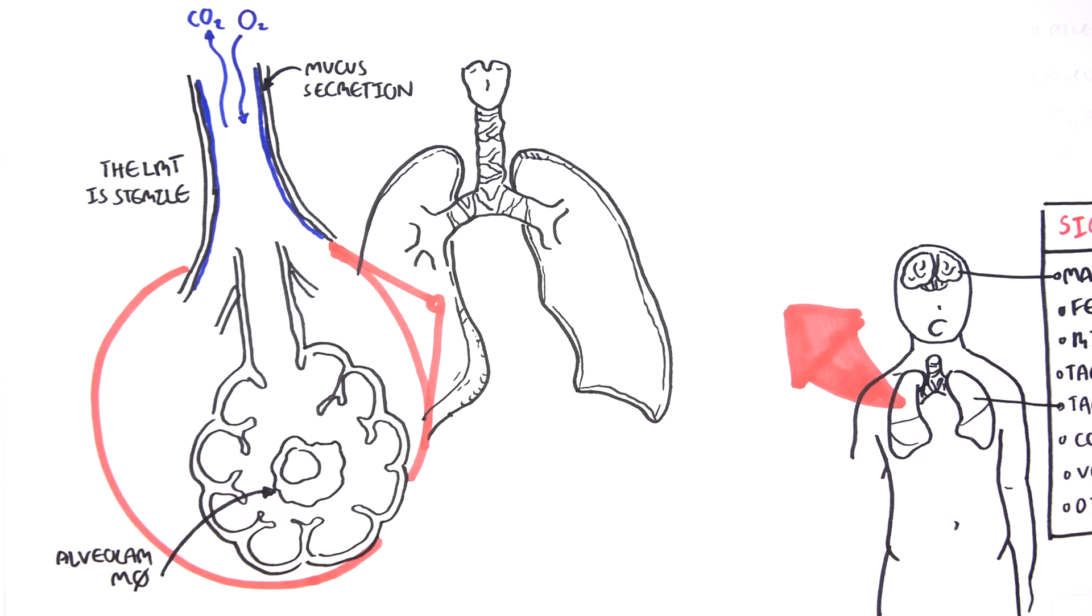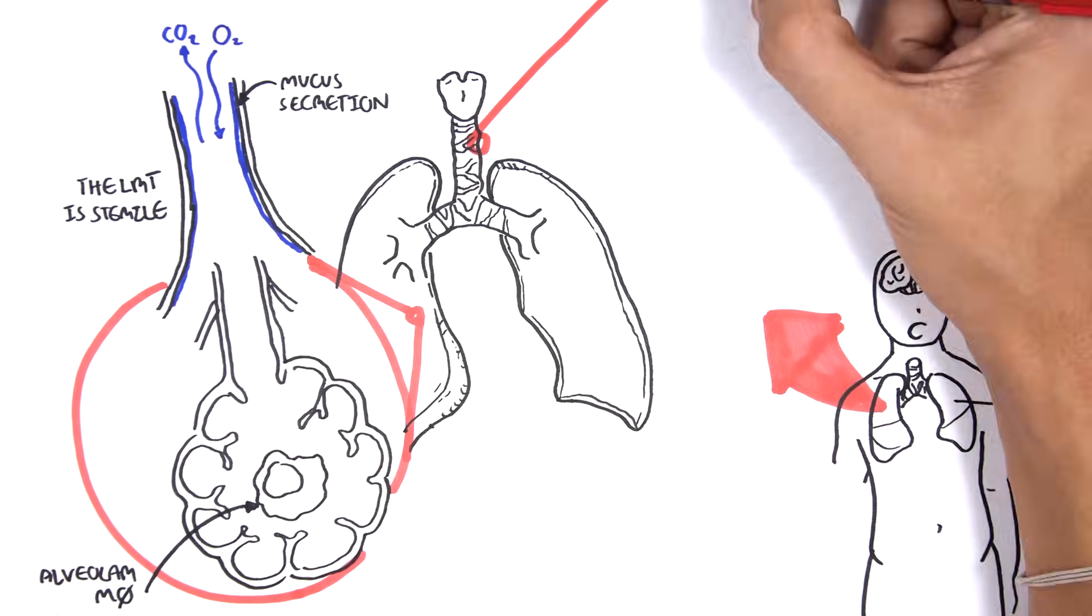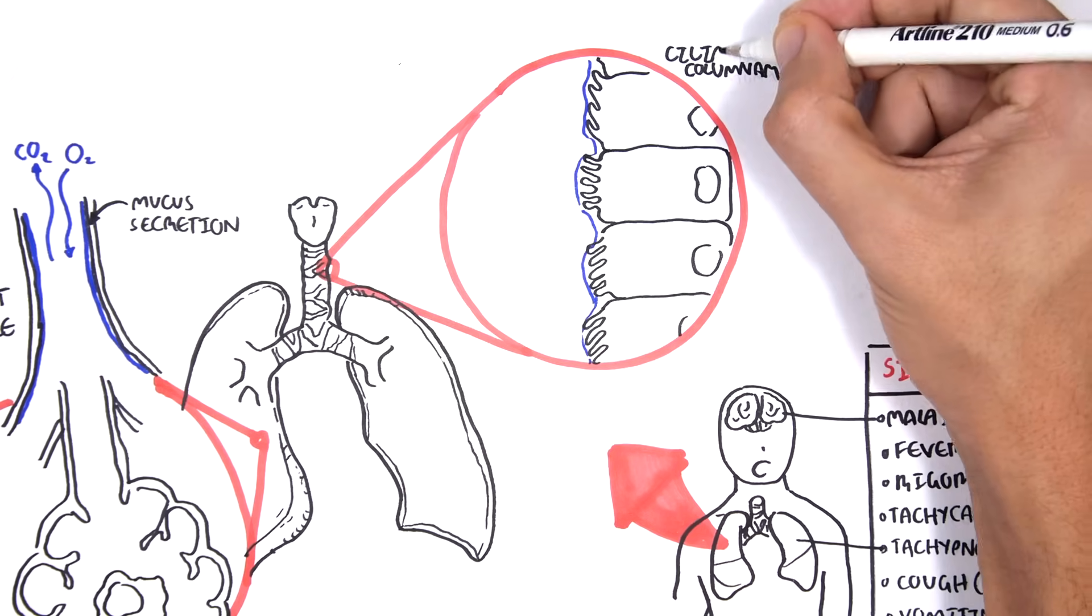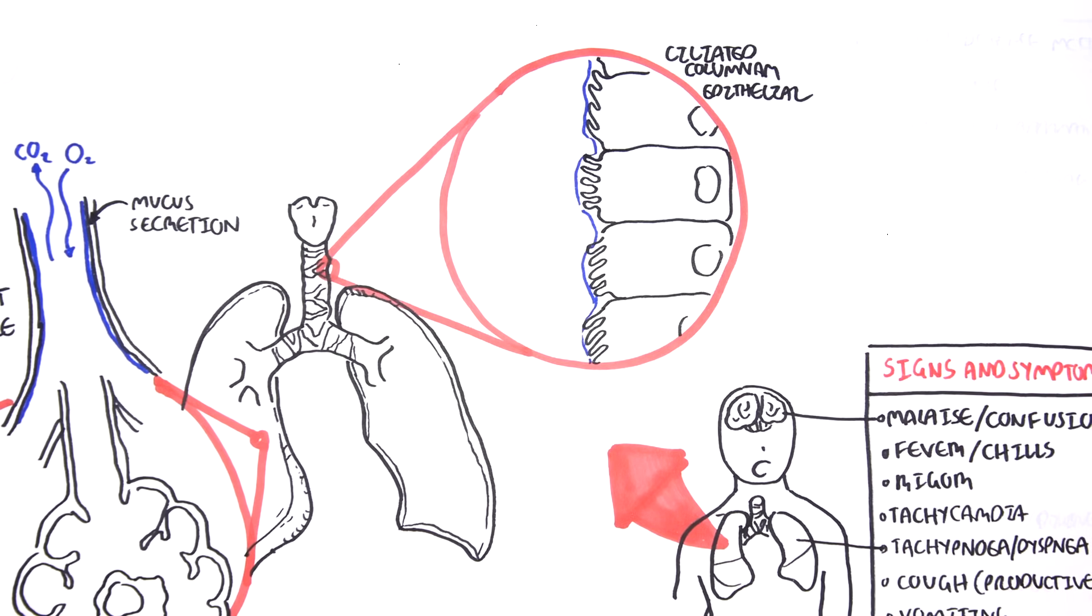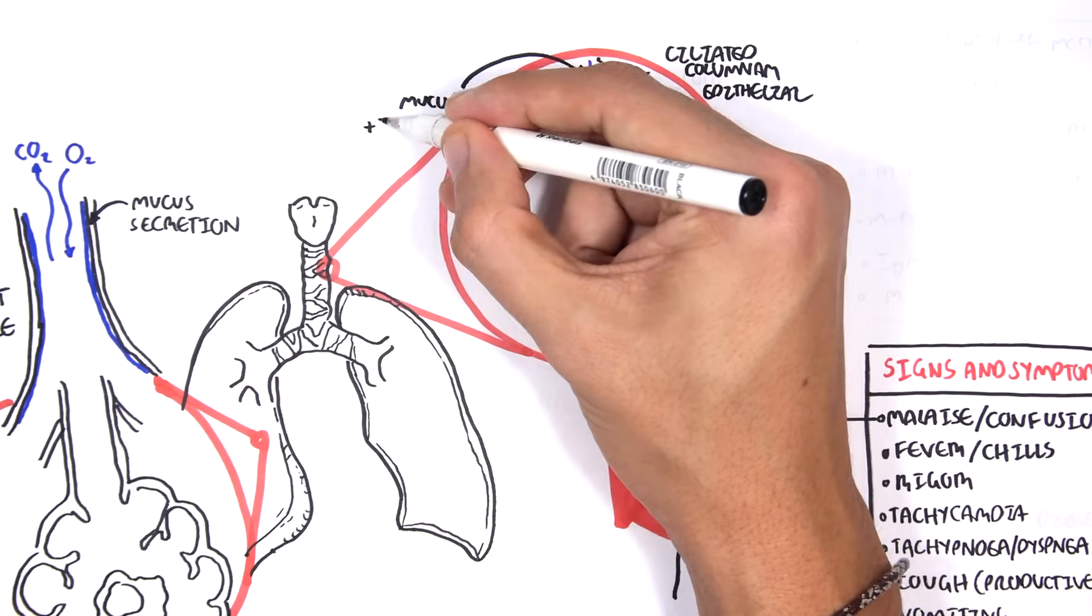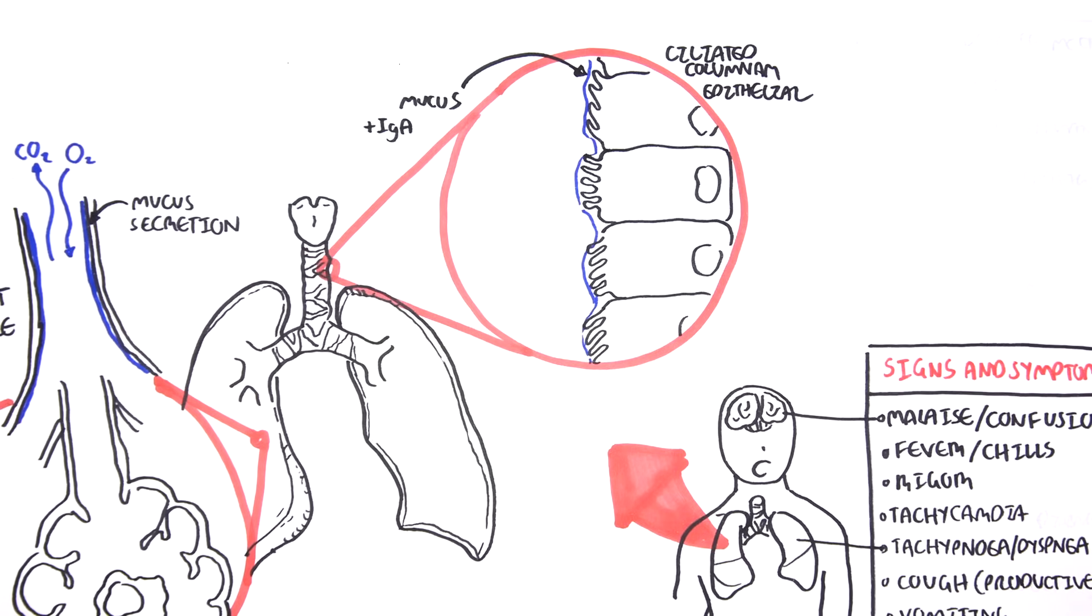Within some alveoli there are alveolar macrophages which help keep the area sterile. If we look at the trachea and bronchus, we see they are made up of special ciliated columnar epithelial cells. There are also goblet cells around the respiratory tract which secrete mucus. The mucus also contains antibodies, IgA, which help eliminate microorganisms.